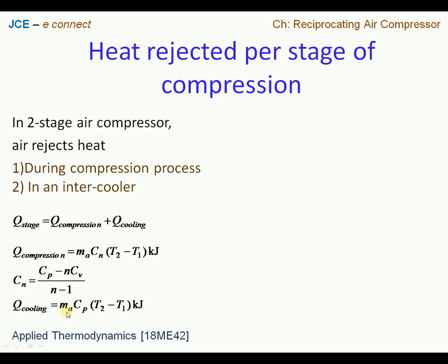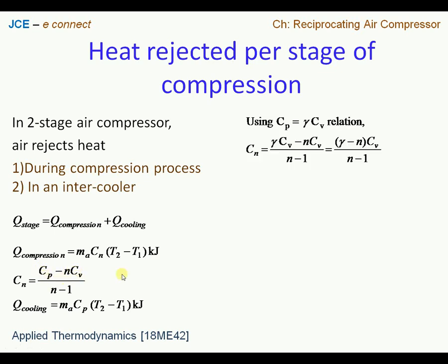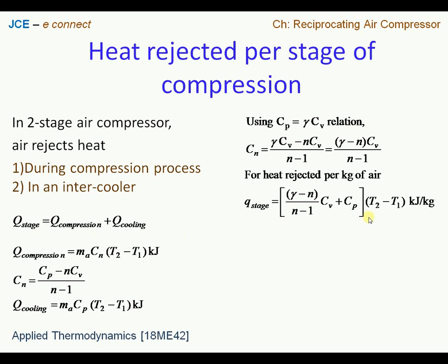For the heat rejected during cooling, one can write mass flow rate of air times cp times the change in temperature. Using the relation cp/cv = γ, one can modify the cn relation so that cn takes the final form (γ − n)·cv / (n − 1). Plugging in both the heat transfer due to compression and heat transfer due to cooling, we get the total heat rejected per stage.